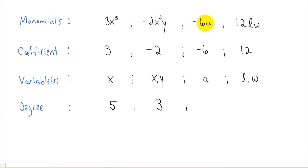What is the degree on negative six a? Well, a is raised to the first power. Again, we don't write it, but it's there. So the degree is one. And how about the degree of our last monomial? l has a power of one on it, and w has a power of one on it. You add those two together, and the term has a degree of two.